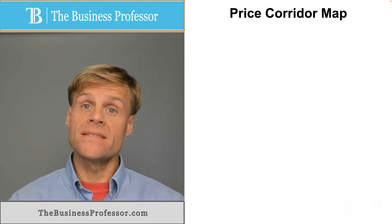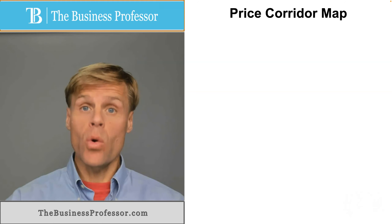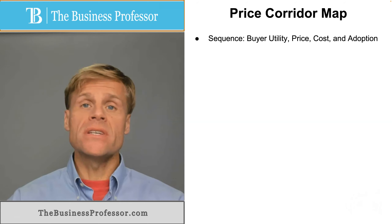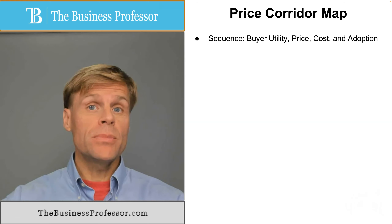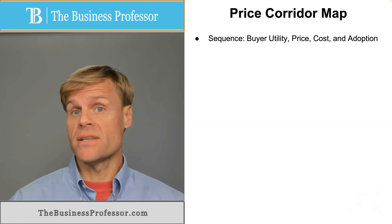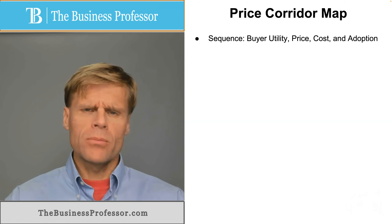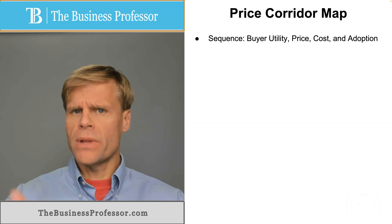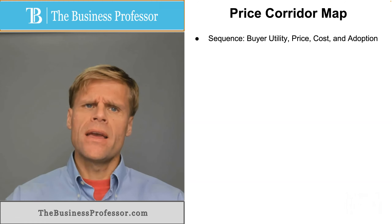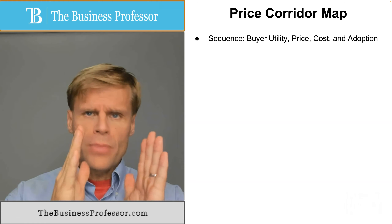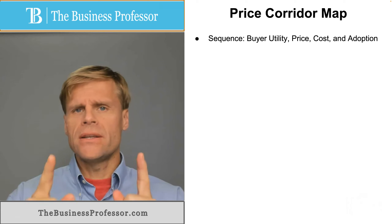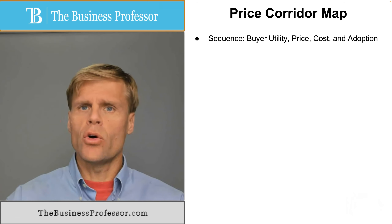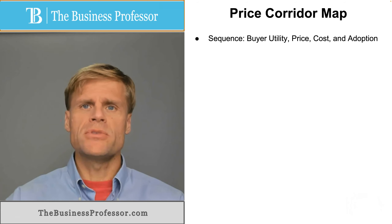What is the price corridor map? Generally this is used as part of the implementation process for Blue Ocean Strategy. The sequence for planning and implementation usually goes from buyer utility to price evaluation, cost evaluation, then ultimately the adoption phase.